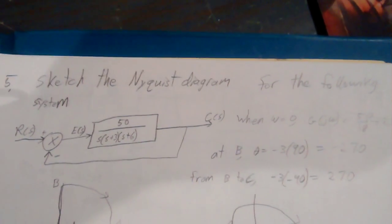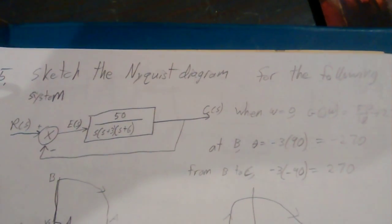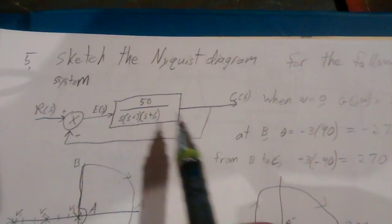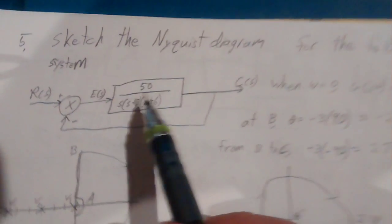Our homework 8, problem 5: sketch the Nyquist diagram for the following system. We have our unity feedback system with this function.